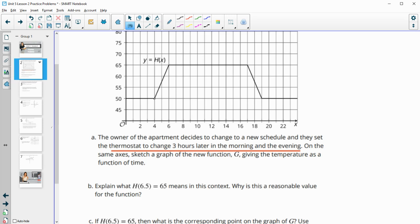So instead of starting this at 4 a.m., the 50 degrees, they move it up to 7 a.m. So that means that it's going to reach its peak height three hours later as well.